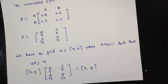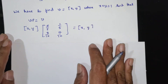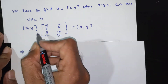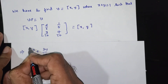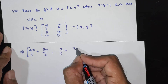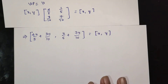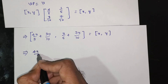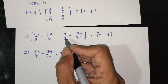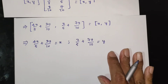Then (x, y) multiplied column-wise gives: x · (4/5) + y · (3/10) equals x, and x · (1/5) + y · (7/10) equals y. This implies 4x/5 + 3y/10 equals x, and x/5 + 7y/10 equals y.